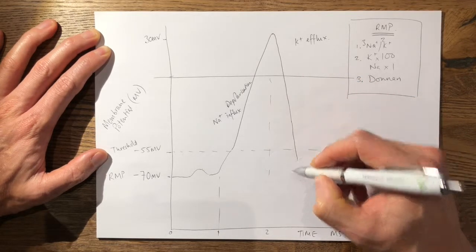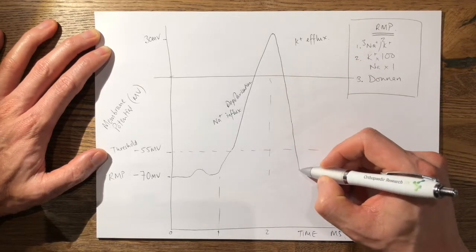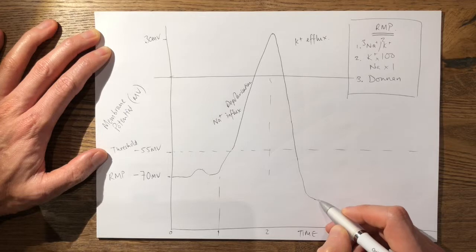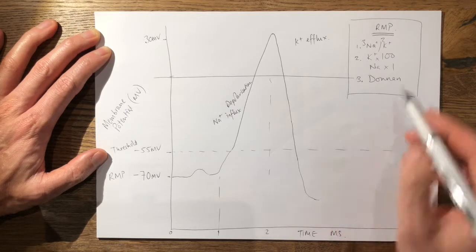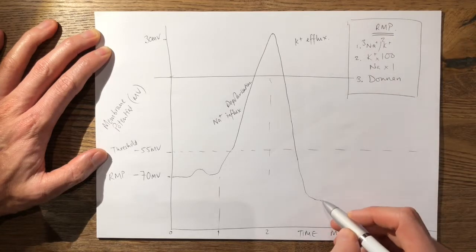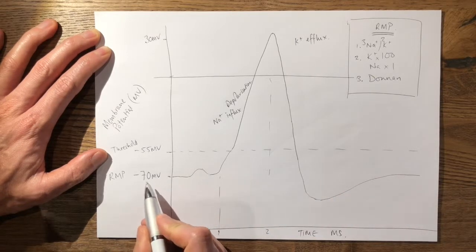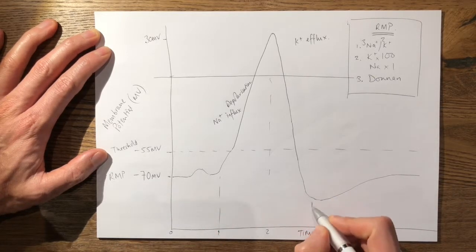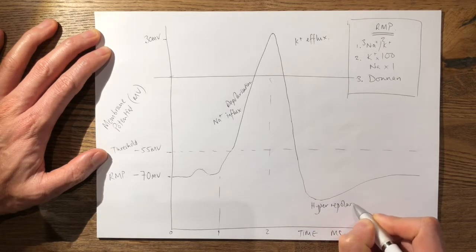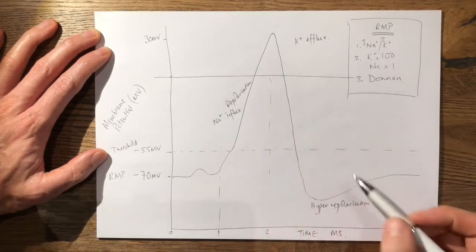However, because there's a delay in the closing of the potassium channels, it actually hyper-repolarizes. And then they finally shut down here. And when they finally shut down here, you then have all these effects here, which normally maintain the resting membrane potential working before it gradually restores itself to its resting membrane potential at minus 70 millivolts. So this is hyper-repolarization due to the delay in the potassium channels closing.